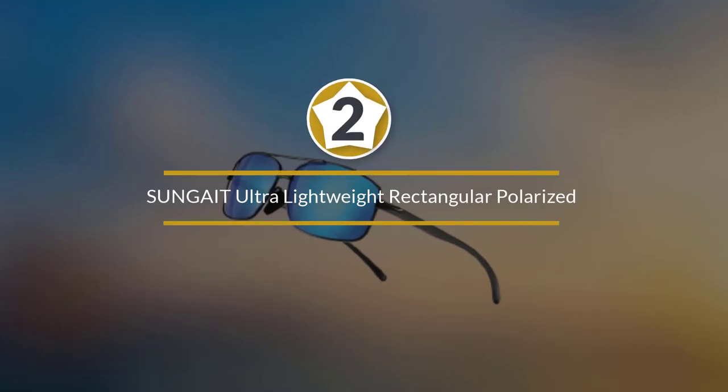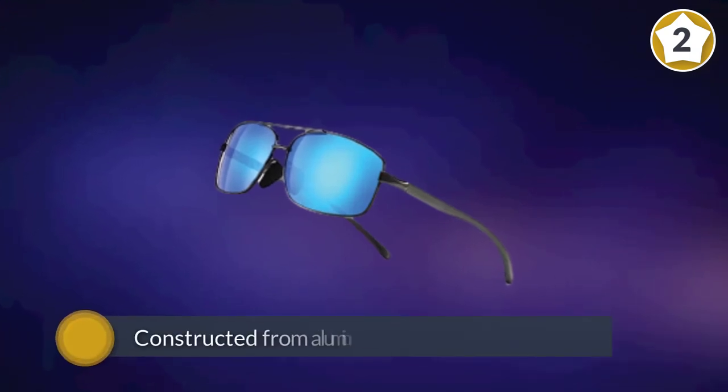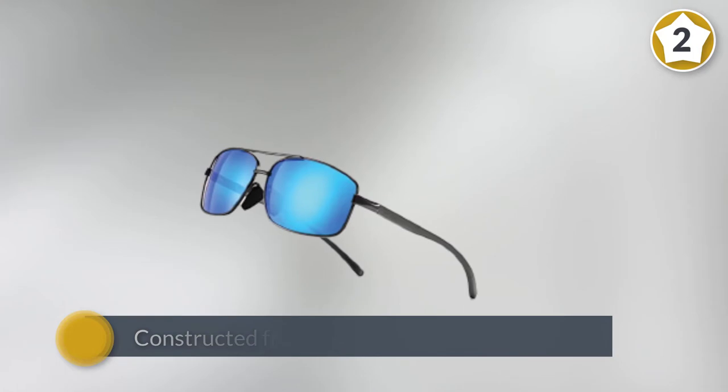Number 2: Sungait Ultra Lightweight Rectangular Polarized Sunglasses. Our top pick features a traditional rectangular design and is available in a variety of color combinations.